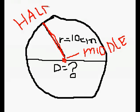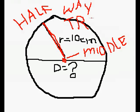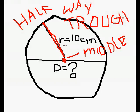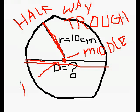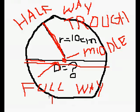It means the radius is half the way through the circle, while the diameter — the long line here — goes the full way through the circle.